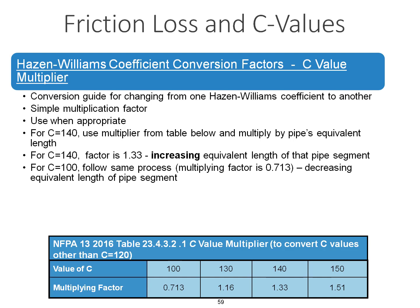Table 23.4.3.2.1 is the C-value multiplier to convert C-values other than C equals 120. For example, C equals 140, the factor is 1.33, increasing the equivalent length of that pipe segment.